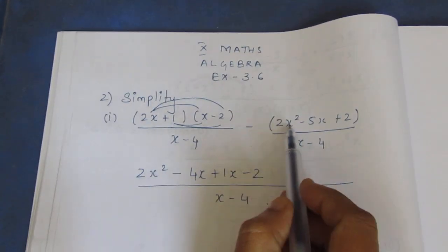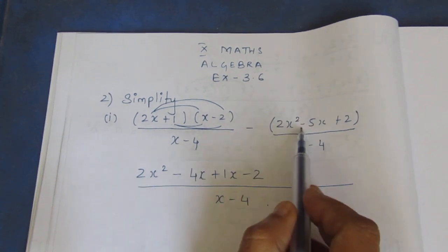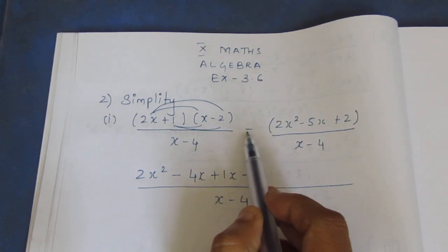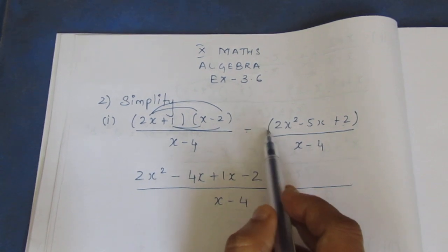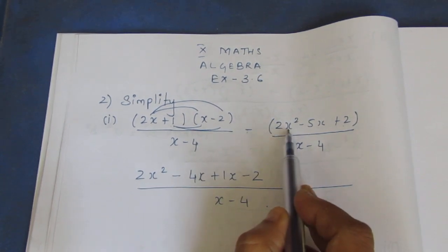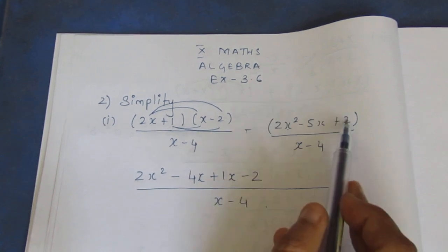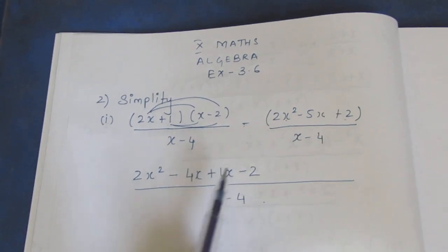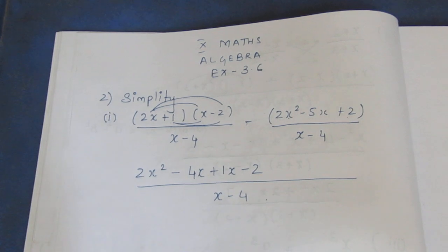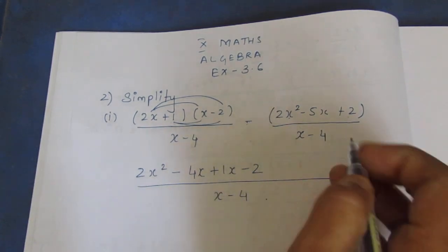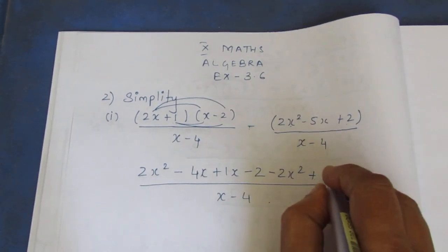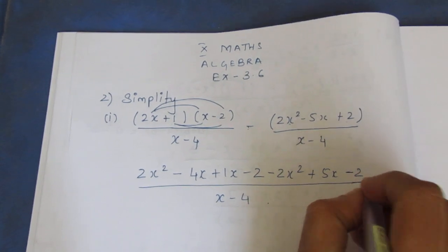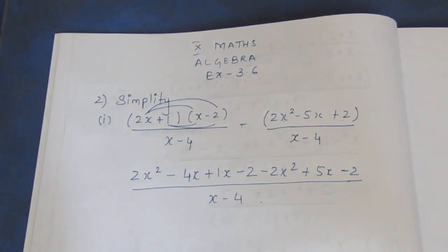Now remove all the minus sign — remove all the brackets. If there is a minus sign in this way, remove all the minus sign. It is very simple. You can change the sign: plus becomes minus, minus becomes plus. If you say minus 2x squared, plus 5x, plus minus minus 2. Now we will solve like terms.